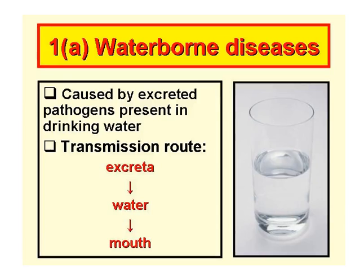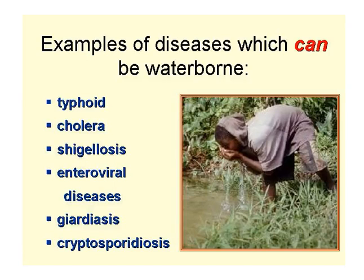First we will look at the waterborne diseases. These diseases are caused by pathogens which are present in drinking water. Basically the transmission route is the excreta of one person into water and then that water being drunk by somebody else. This is a list of examples of diseases which can be waterborne — and that word 'can' is very important.